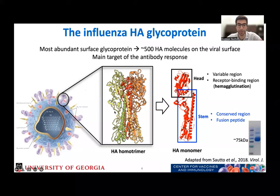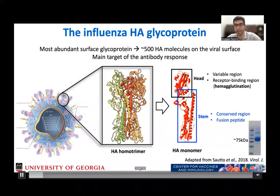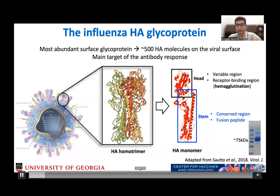From a structural point of view, HA is a homotrimer in which we have three identical monomers. Each monomer is composed by a head region, which is the most variable region and contains the receptor binding domain. It's also responsible for a phenomenon called hemagglutination, which is the capability to agglutinate red blood cells. And then we have a stem region, which is more conserved and contains the fusion peptide, which allows the virus to fuse with the cell membrane.